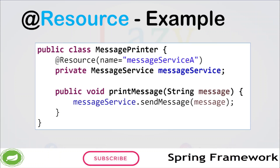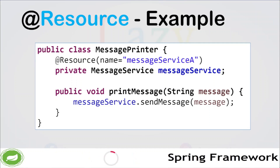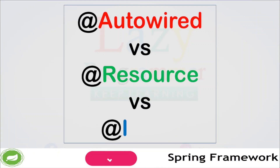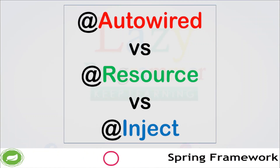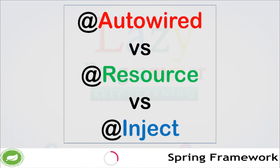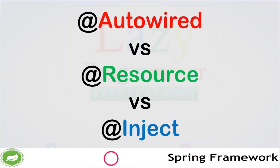Similarly, we have the @Inject annotation which can also be used to wire beans. All three annotations — @Autowired, @Inject, and @Resource — do the same work, but they differ in the execution path taken to find the required reference. @Resource narrows down the search first by name, then by type, and finally by qualifier. @Autowired and @Inject narrow down the search first by type, then by qualifier, and finally by name. Also, @Autowired is specific to Spring Framework, but @Inject and @Resource are not — they belong to JSR standards.